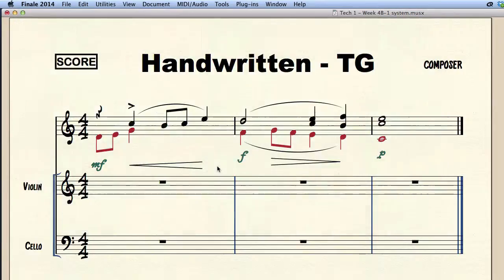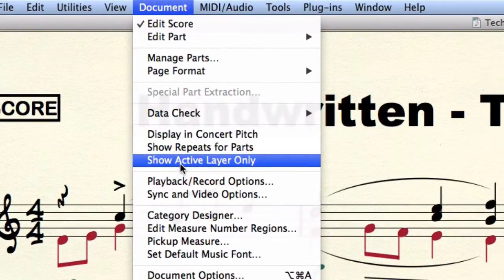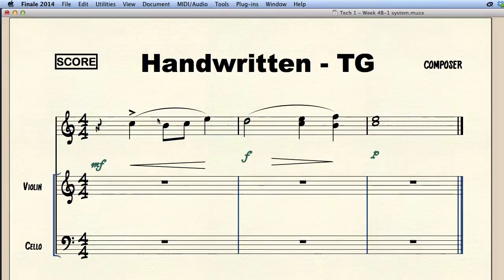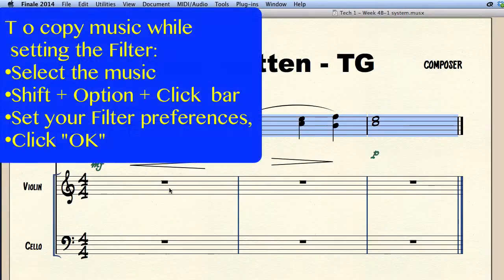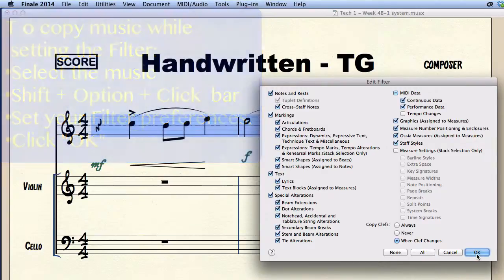In order to copy one layer at a time I need to switch to show active layer only in the document menu. Now Finale shows me only the active layer in this case layer 1. I select the measures I'd like to copy, hold shift option, click the bar where I want to copy it to and Finale will open the filter dialog. I click all because I want to copy everything and press ok.